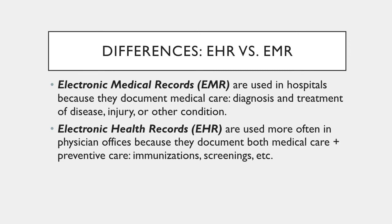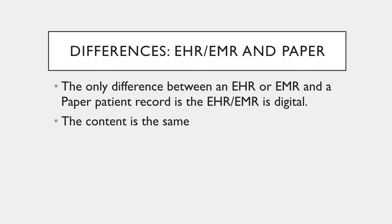You may have heard EMR and EHR used interchangeably. There is a slight difference: health records include preventive care, whereas medical records only cover the diagnosis and treatment of disease, injury, or other condition. The content is almost identical between EHR, EMR, and paper. The difference between digital and paper is not about the integrity or accuracy of the information itself — it's just where it's written.